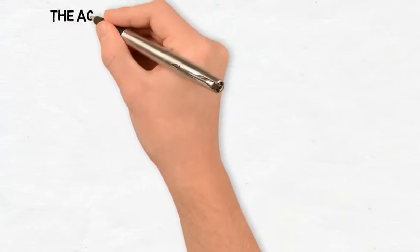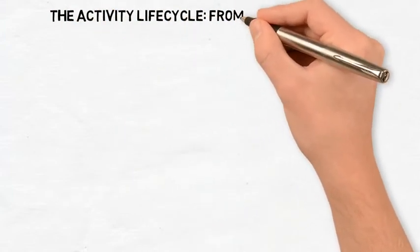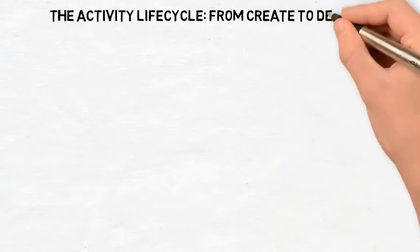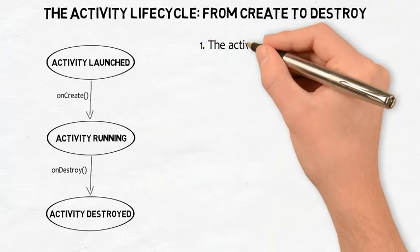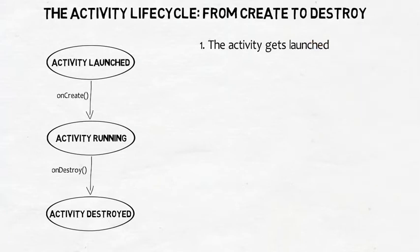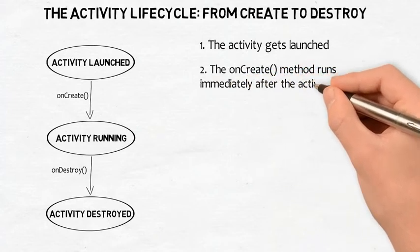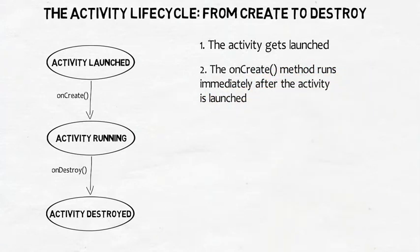Let's take a closer look at how these methods fit into the activity states. The activity lifecycle from create to destroy. First, the activity gets launched — the activity object is created and its constructor is run. Second, the onCreate method runs immediately after the activity is launched. The onCreate method is where any initialization code should go.